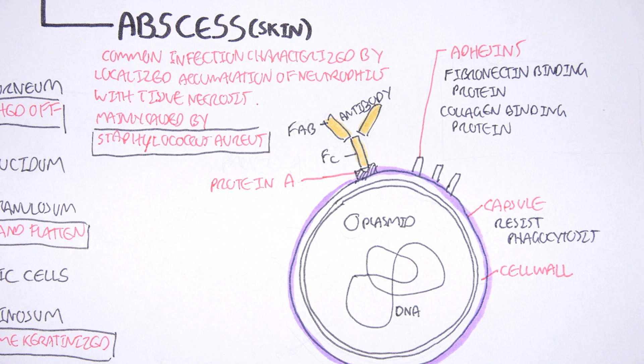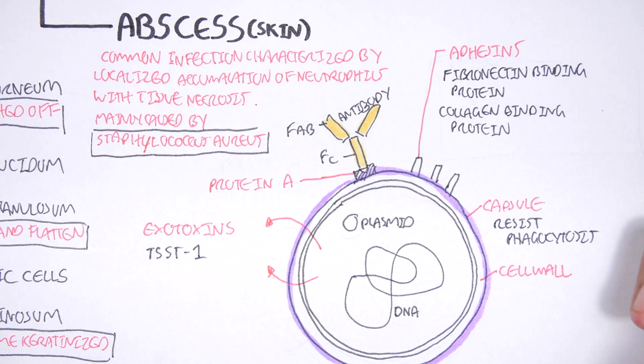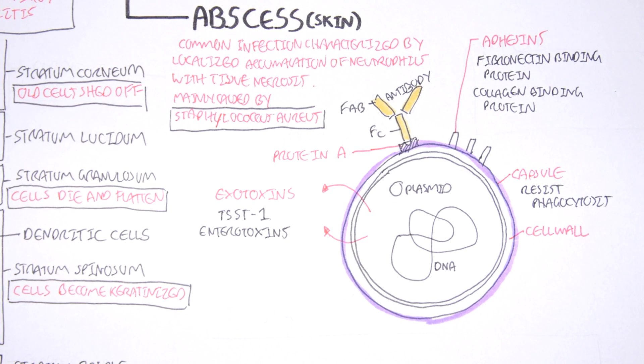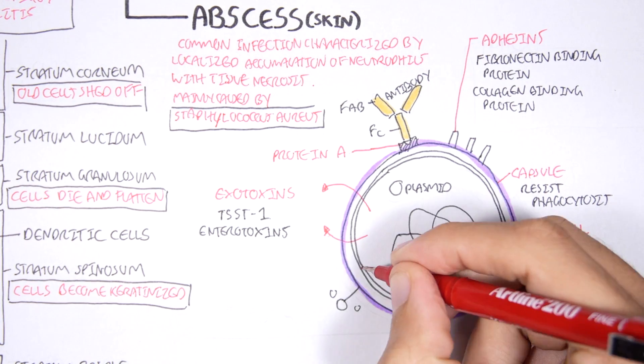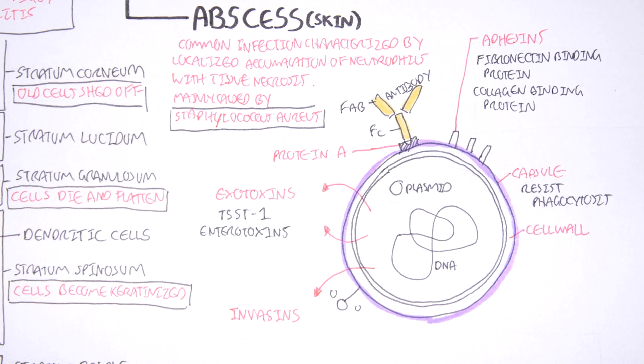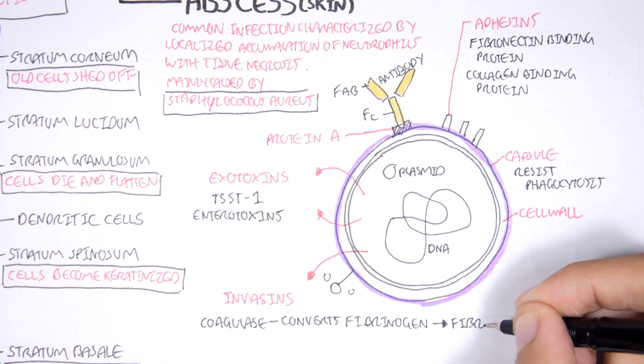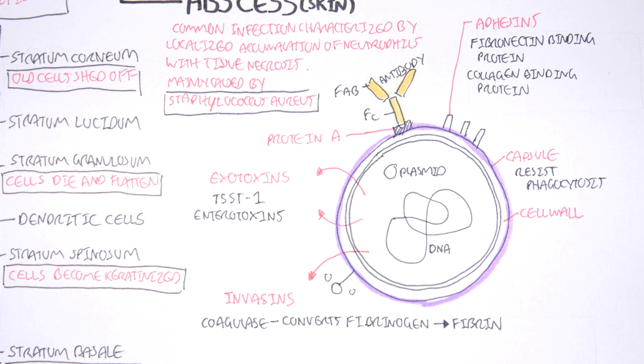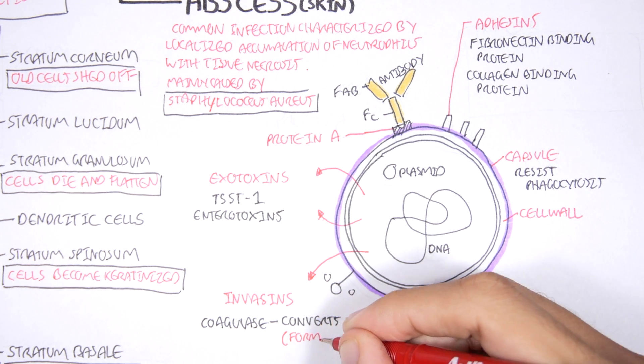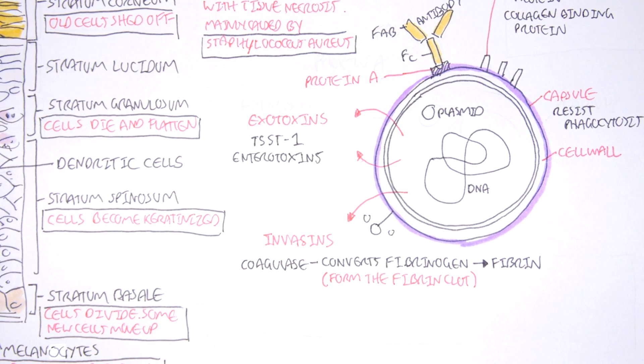Staphylococcus aureus also produces some exotoxins such as TSST-1 and enterotoxins, which I won't talk into. Staphylococcus aureus also produces invasins. The first is known as coagulase. Coagulase is an enzyme that converts fibrinogen, which is found in our body, into fibrin. This will form a fibrin clot. So coagulase will essentially form a fibrin-type clot.